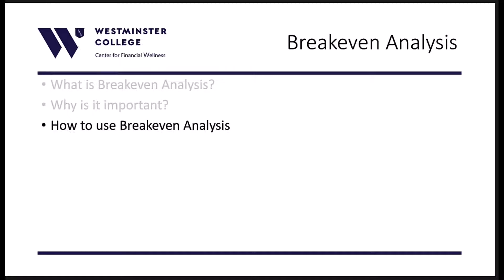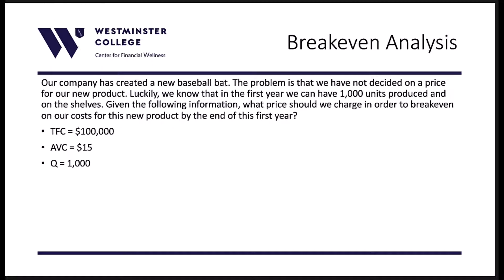Now we'll go into an example. Our company has created a new baseball bat, but we have not decided on a price for the new product. We know that in the first year we can have a thousand units produced and on the shelves. Given the following information, we have $100,000 in total fixed costs, the average variable cost is $15, and we can produce a thousand units in the first year.